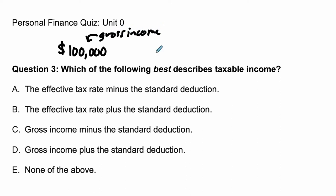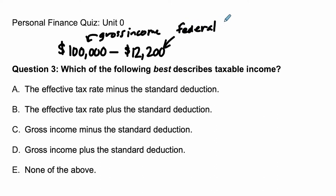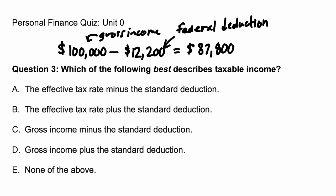And the government's going to charge you taxes, but before you are charged taxes, you take away what's called a standard deduction. The standard federal deduction is $12,200. All that means is that $12,200 is not taxed. And the difference between these two numbers — in this case $87,800 — that is your taxable income. It's the amount that is going to be taxed from your gross income after you've taken away your federal deduction.